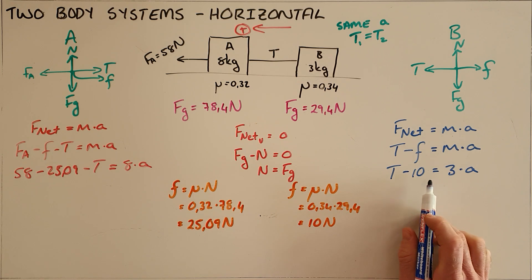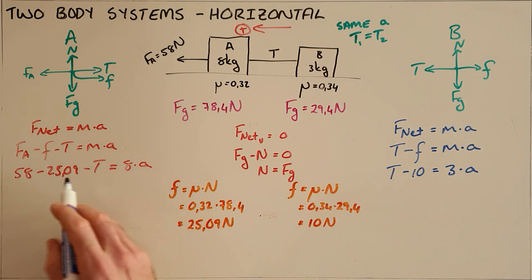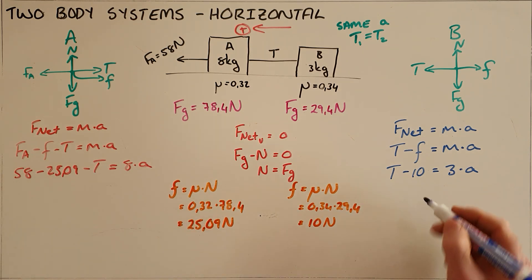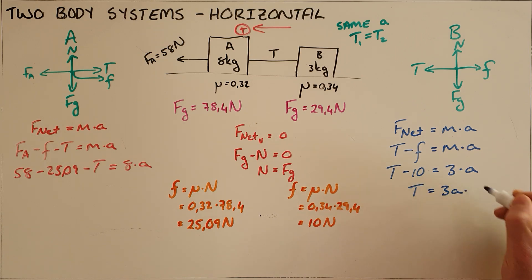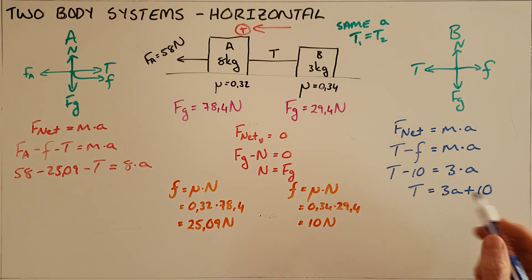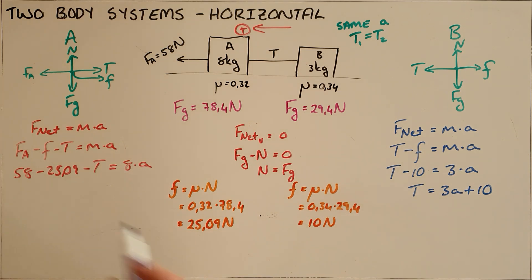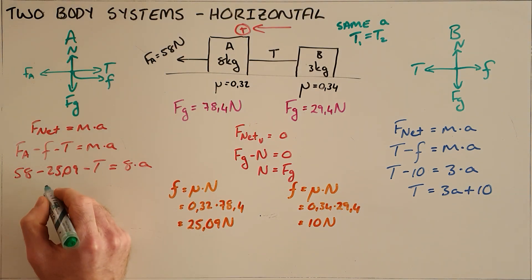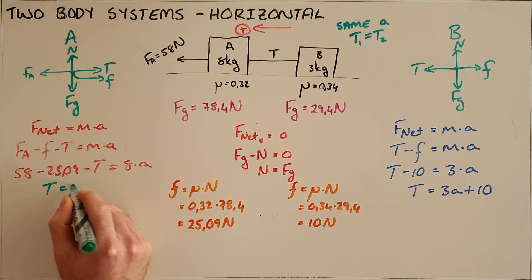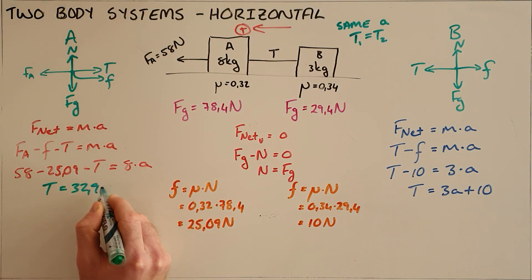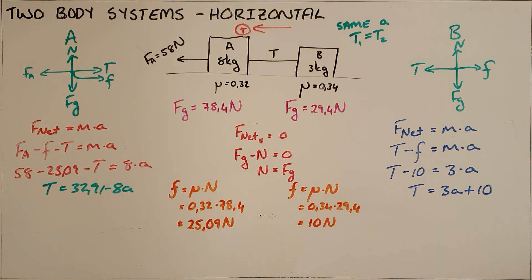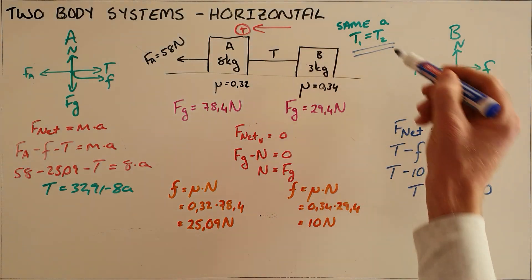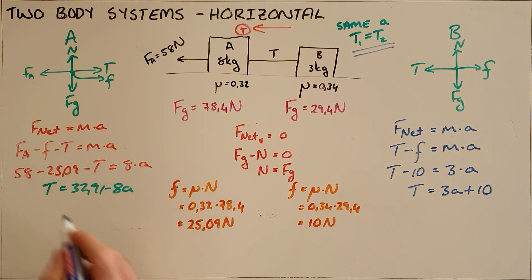We now have two expressions with two unknowns: tension and acceleration. I can rewrite the second equation as tension equals 3A plus 10. I can also rewrite the first equation in the form where tension equals 32.91 minus 8A.